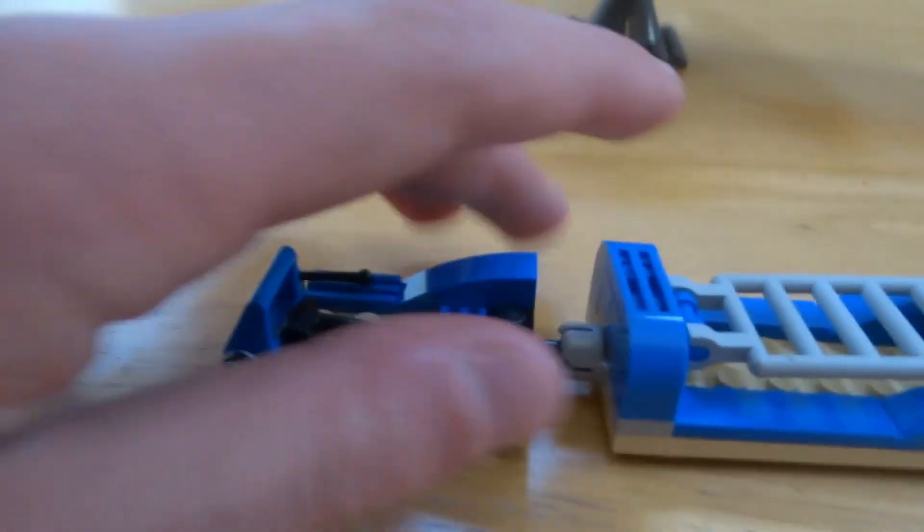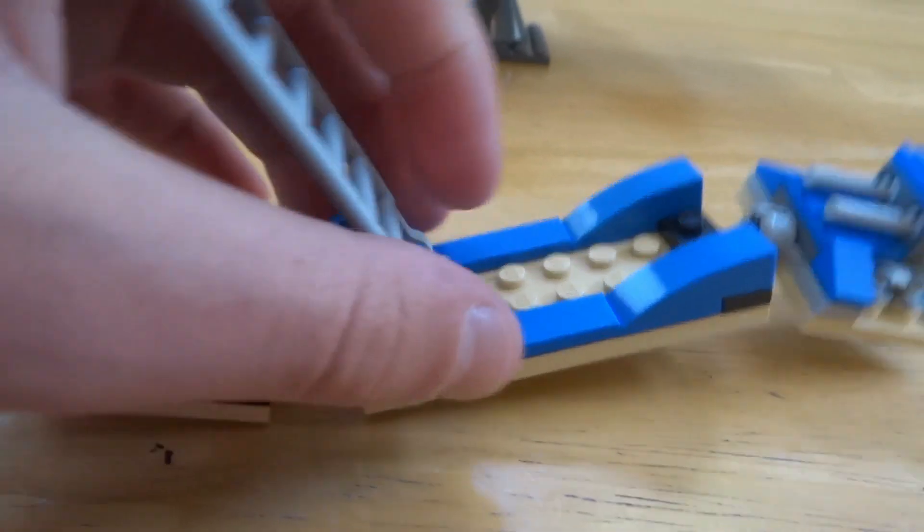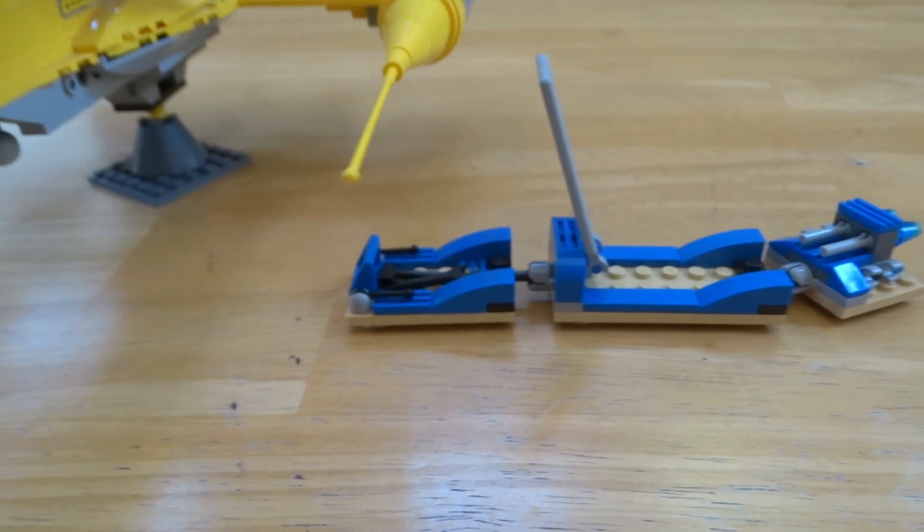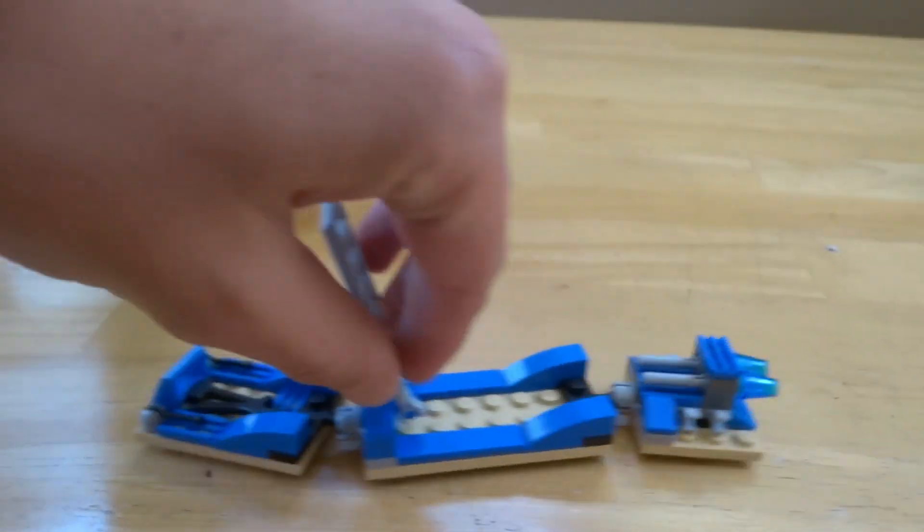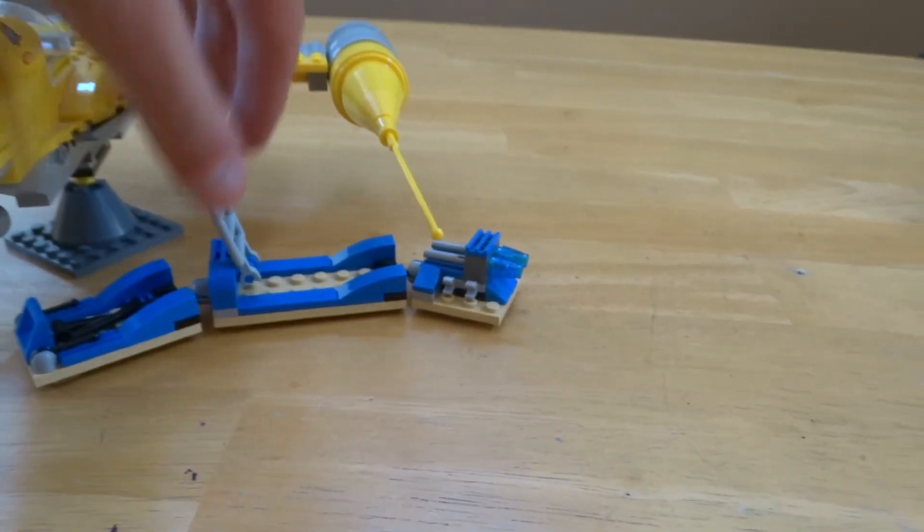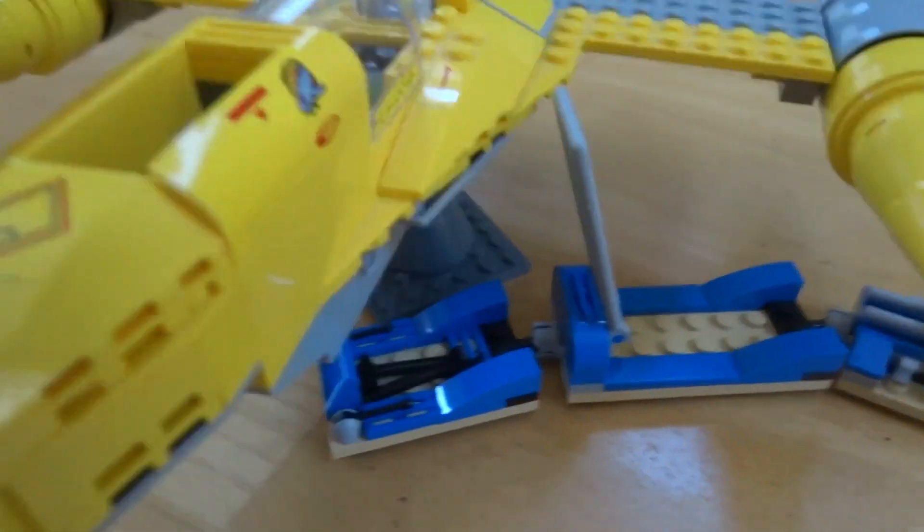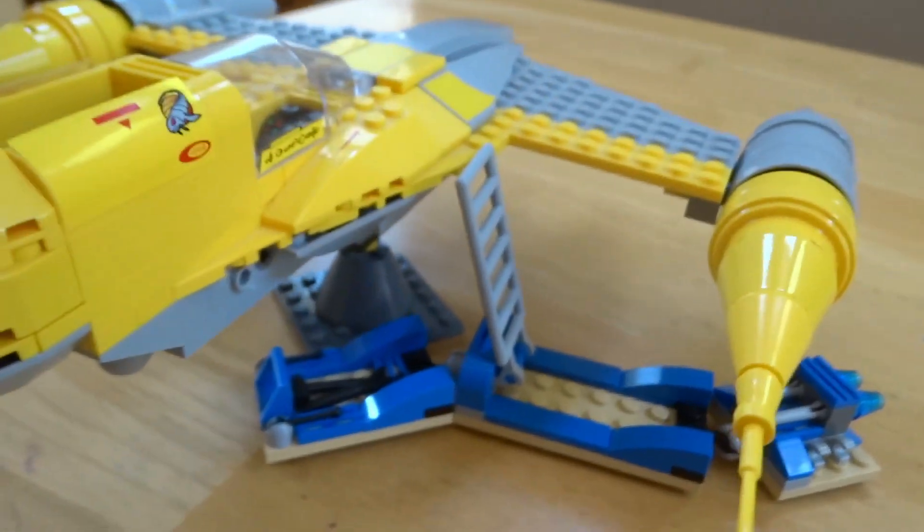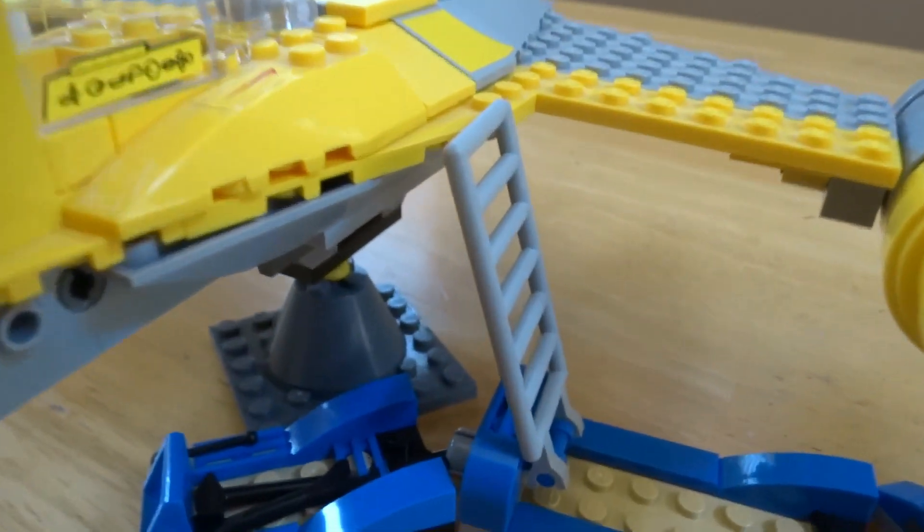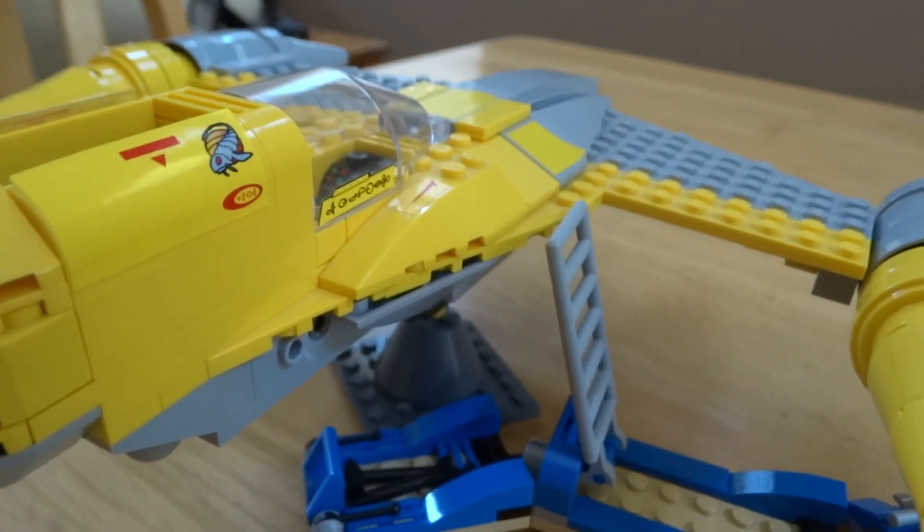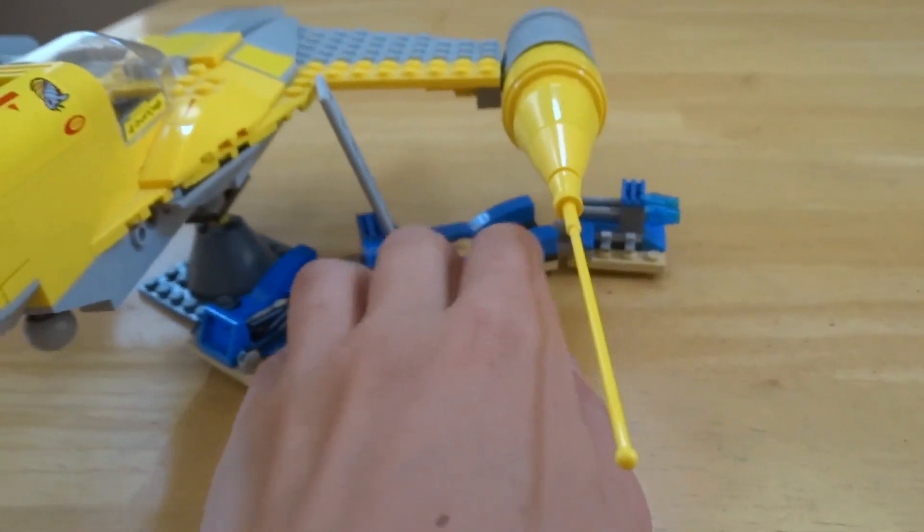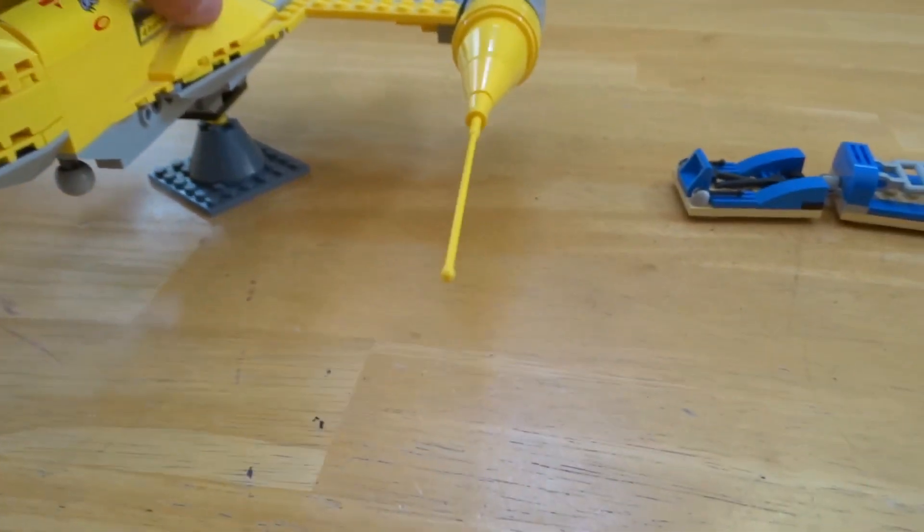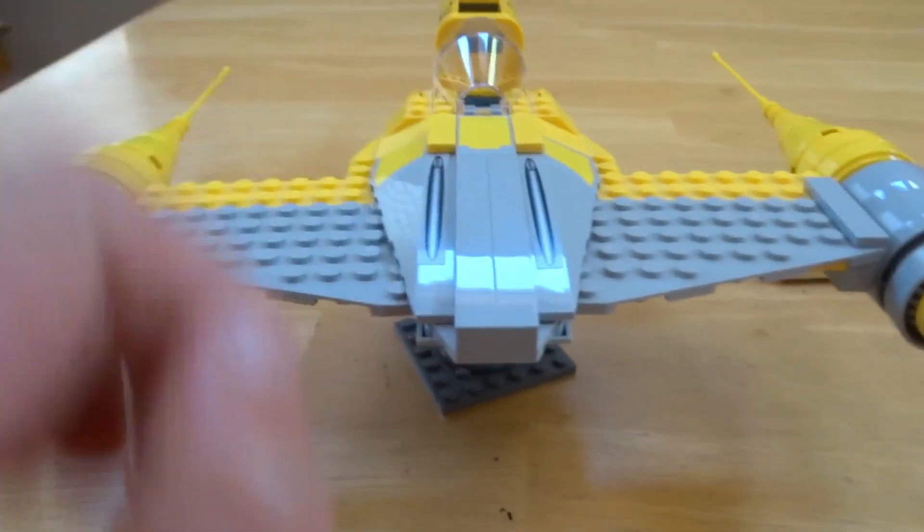If we pull over the actual starfighter, a major part of it that I do like is although it might not be lined up exactly, I do like how the ladder actually does come pretty close if not perfectly up to the actual cockpit for the Naboo starfighter.